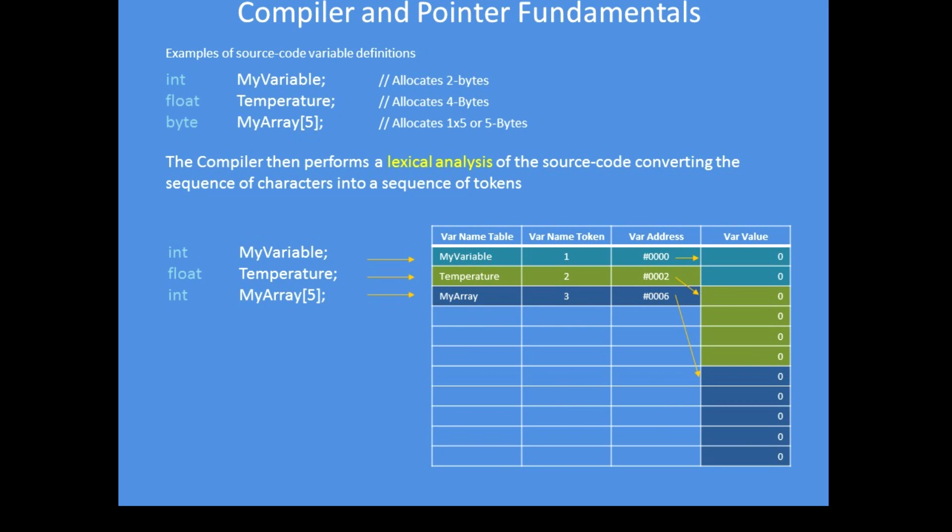The first statement at the top is the definition of some variables: an integer variable called my_variable, a floating point variable called temperature, and a byte array of five cells. A compiler puts the variable name into a table and assigns a token to that variable name, so from that point forward it won't use the word 'my_variable' — it'll use token number one, temperature two, and my_array three. This makes the compiling process much simpler.